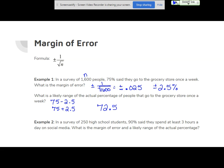So the actual percentage is likely somewhere between 72.5% and 77.5%. There might be less. There might be a little more, but somewhere in that range is most likely the actual number of people that go to the grocery store once a week.